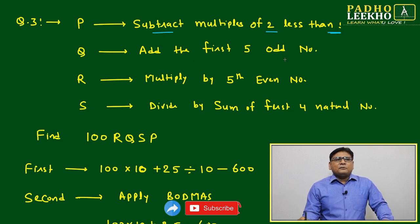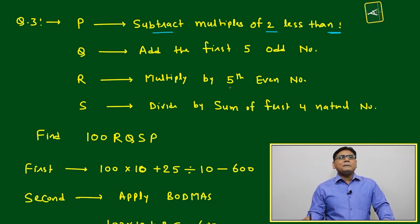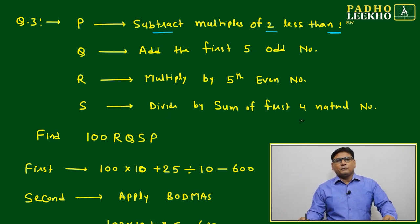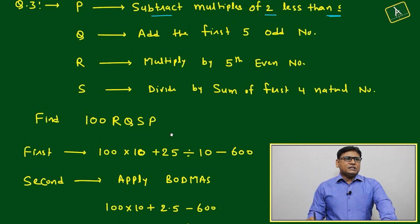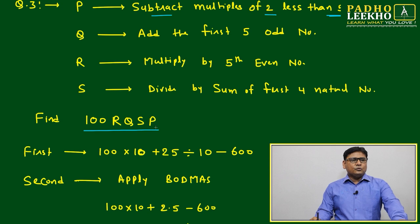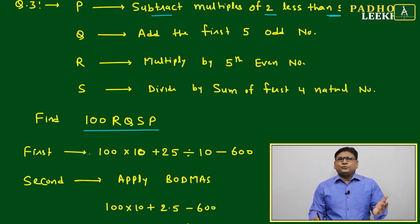Q: add the first five odd numbers. R: multiply by fifth even number. And S: divide by sum of first four natural numbers. This will come based on these instructions. We have to find 100RQSP. What do we have to do? It looks like a little challenging. What we will do with RQSP? No need to worry.